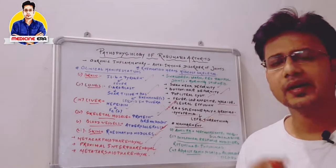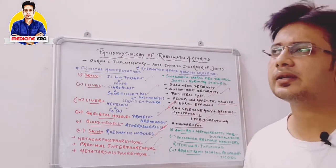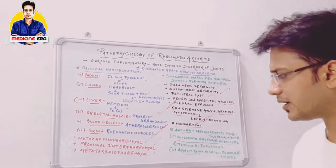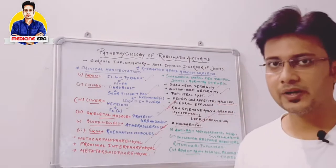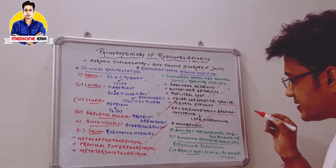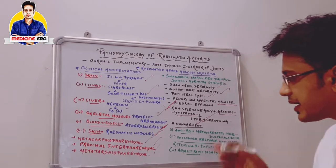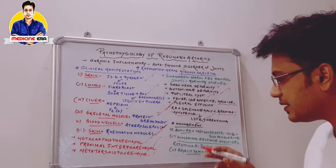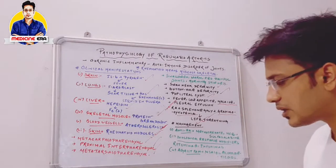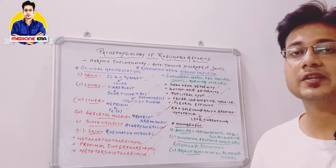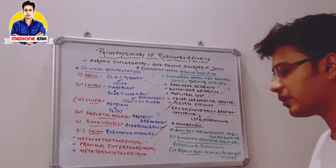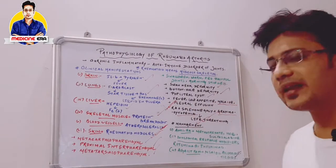In case of management, physiotherapy or proper physical exercise should be considered. For pharmacological management or drug management, anti-rheumatoid arthritis drugs — mainly methotrexate, hydroxychloroquine, and sulfasalazine — are used. For biological response modifiers, rituximab and infliximab are used. For management of pain or swelling, different types of NSAIDs (non-steroidal anti-inflammatory drugs) and glucocorticoids are also used.